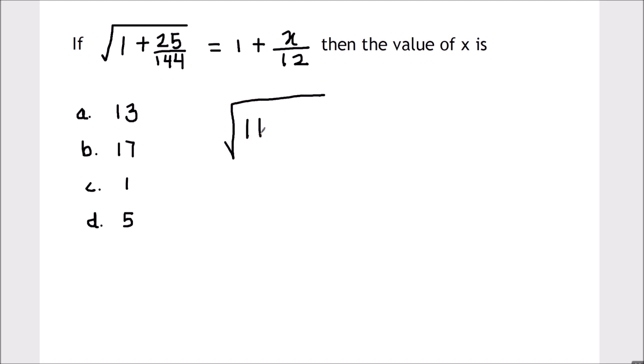Left hand side is 1 plus 25 divided by 144 equals 1 plus x upon 12. We have rewritten the problem, and the first step in this problem is to find the LCM of the denominator. Here on the left hand side, we have the LCM as 144.